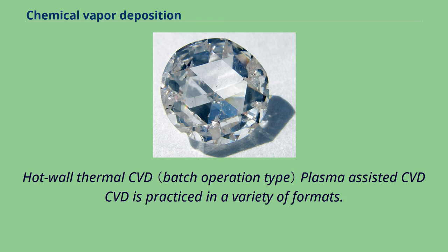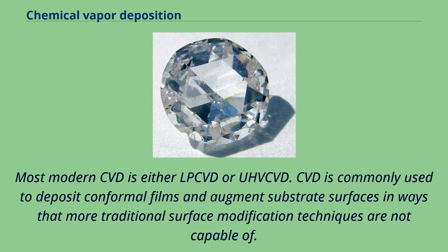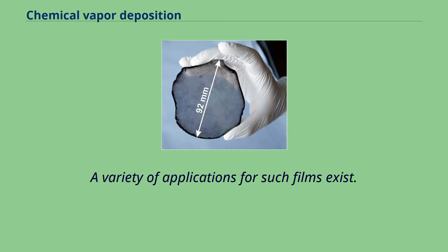Hot-wall thermal CVD and plasma-assisted CVD are practiced in a variety of formats. These processes generally differ in the means by which chemical reactions are initiated. Most modern CVD is either LP-CVD or APCVD. CVD is commonly used to deposit conformal films and augment substrate surfaces in ways that more traditional surface modification techniques are not capable of. CVD is extremely useful in the process of atomic layer deposition at depositing extremely thin layers of material. A variety of applications for such films exist.